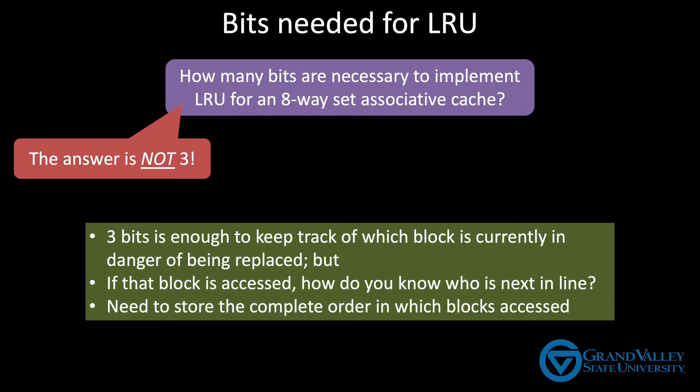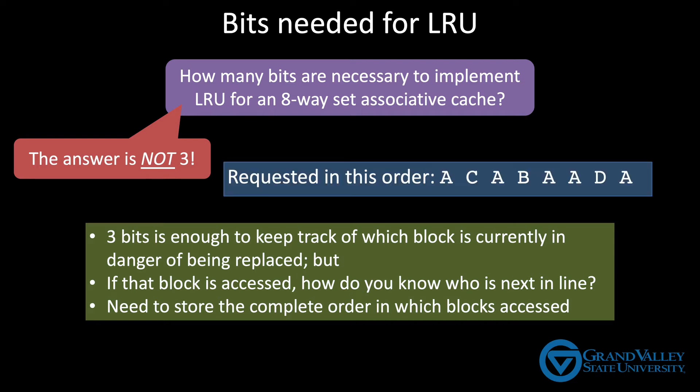So to implement the LRU algorithm, you need more than just three bits to point at one block. You need to store the complete order in which the blocks were accessed. To be clear, I don't mean we need to store the complete history of what was accessed. I just mean in this case, if this is our order, we need to know that A was accessed more recently than D, and D was accessed more recently than B, and so on.